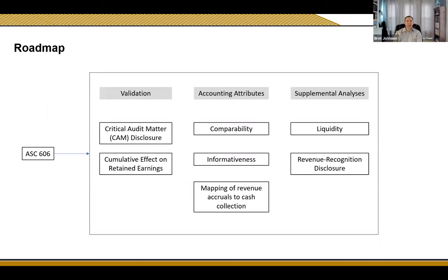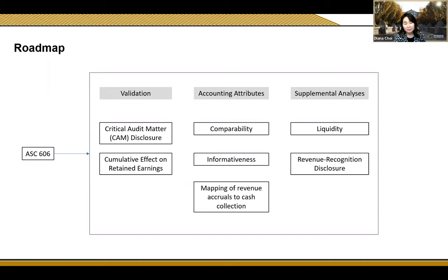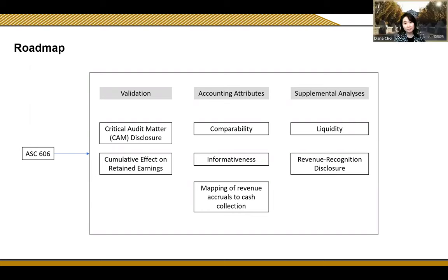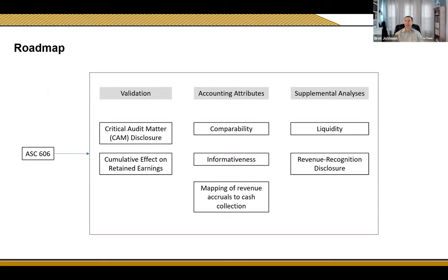I thought your idea of using the critical audit matters—the CAMs—as a validity test that the software industry firms were more affected was a very novel idea. But I think I read that you could only observe that in the post period, correct? That is correct, because the CAM disclosures came out after ASC 606 went into effect. I wondered if you could look at the international setting and look at the key audit matters—K-CAMs—as a supplement. I assume that IFRS 15 was essentially equivalent to 606. Just to look at the frequency of software and computer electronics internationally pre-post, if that would give you a few more observations. That sounds good. Thank you.